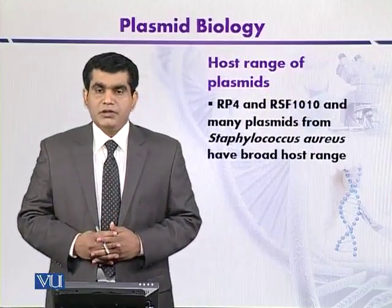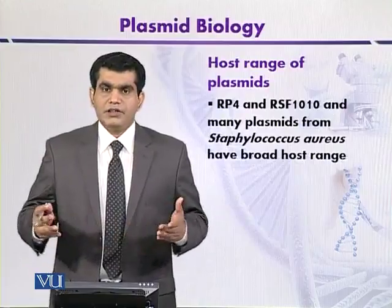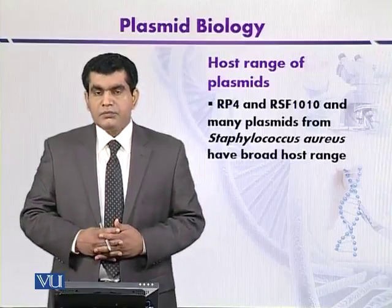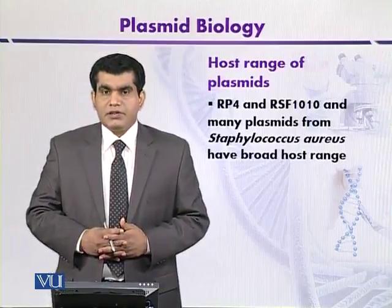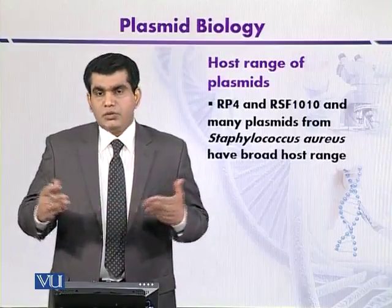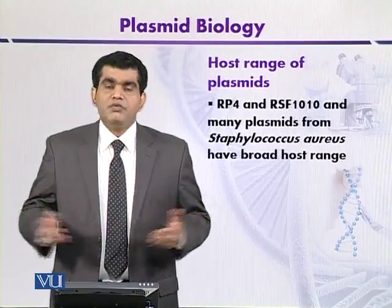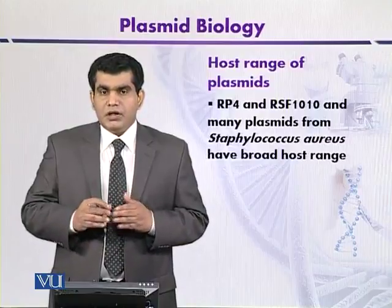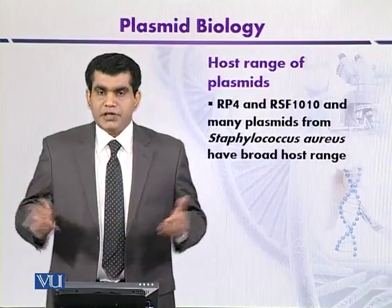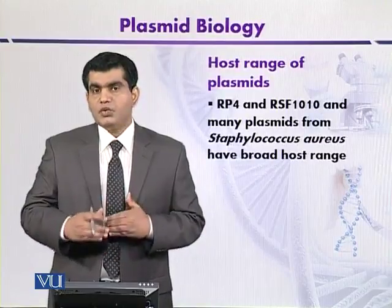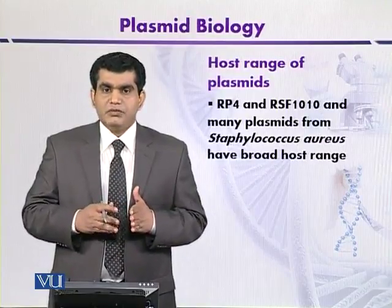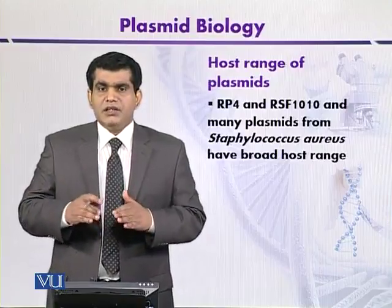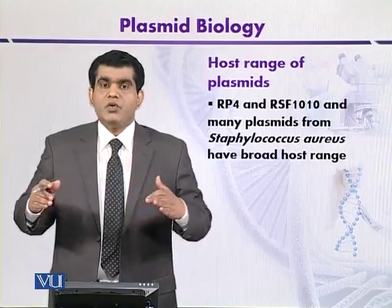Other plasmids like RP4 and RSF1010 have a slightly broader host range. For example, RP4 can be transferred among a variety of gram-negative bacteria, so DNA can be transferred from one gram-negative bacterium to another that are more or less taxonomically related.